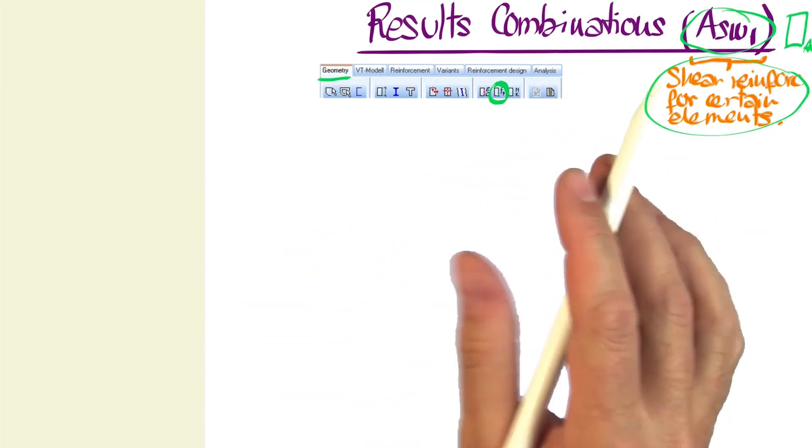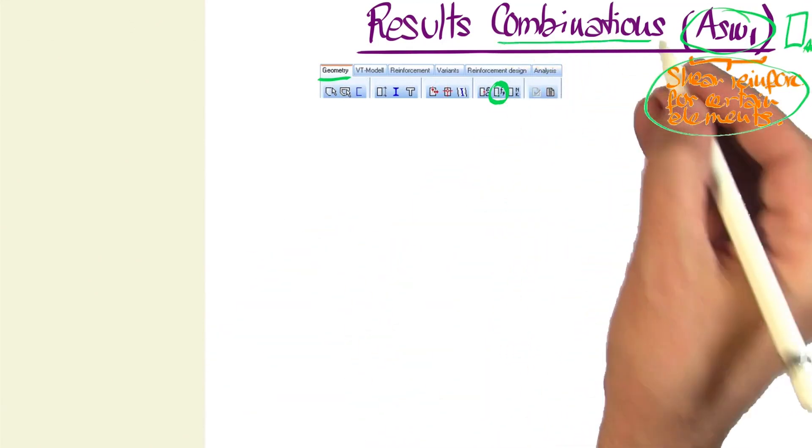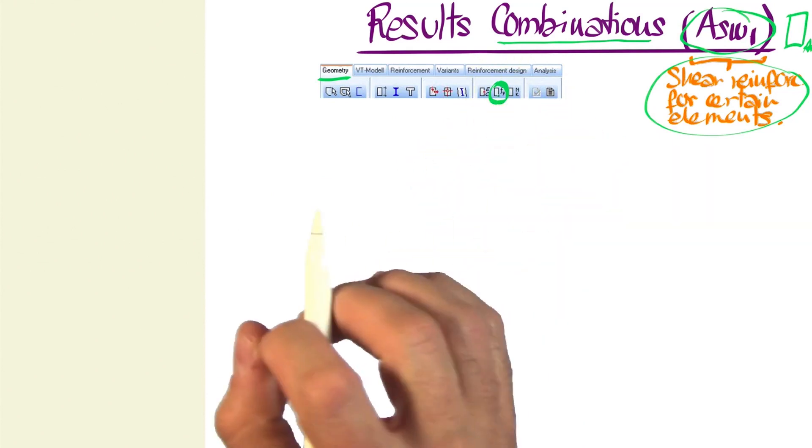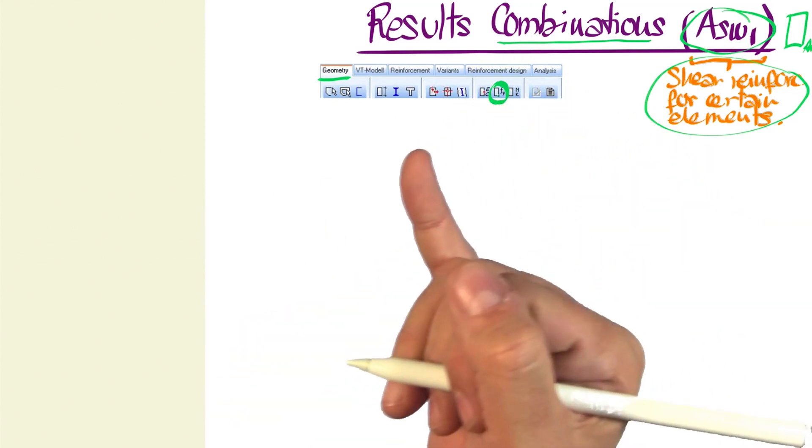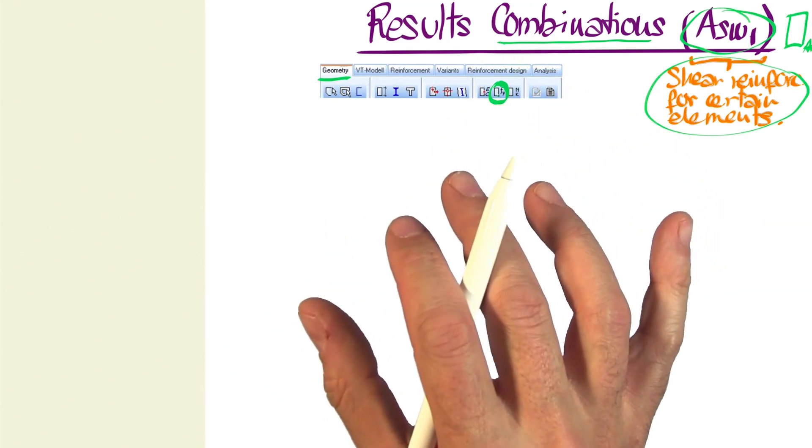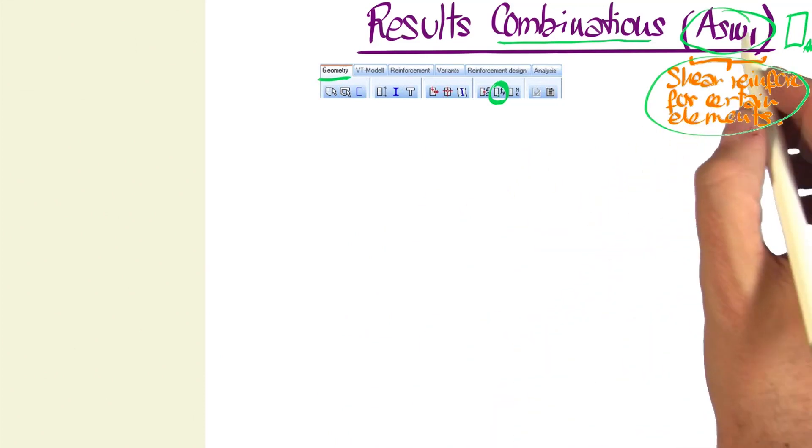What this actually is, is a combination of results that provides us with information on shear reinforcement, hence the SW for shear wall, for a particular element of our transversal cross-section.